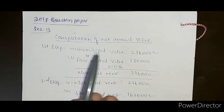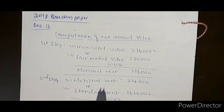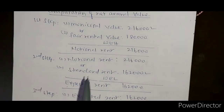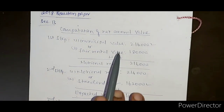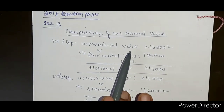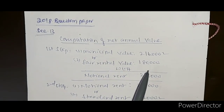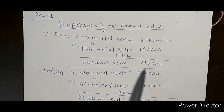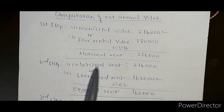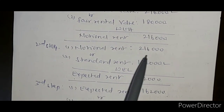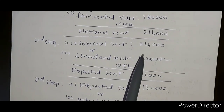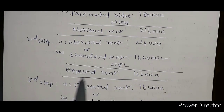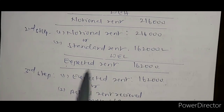The factors involved are municipal value, fair rental value, standard rent, actual rent, unrealized rent, and vacancy period. As per the procedure, the first step is to compare municipal value with fair rental value and take the highest — that is two lakh sixteen thousand. The second step compares notional rent with standard rent, whichever is less: standard rent is one lakh sixty two thousand, so the expected rent is one lakh sixty two thousand.